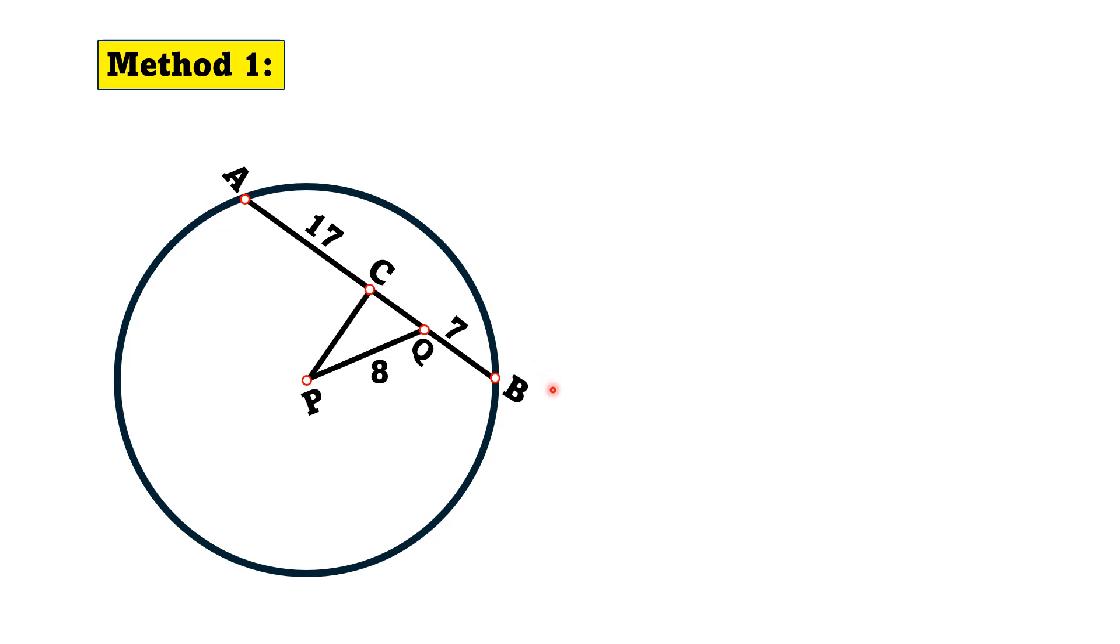Since the whole length AB is 24 units, then AC is equal to CB is equal to 12 units. So CQ length is equal to 5 units, as CB is 12 and QB is 7. So this remaining length is 5 units.